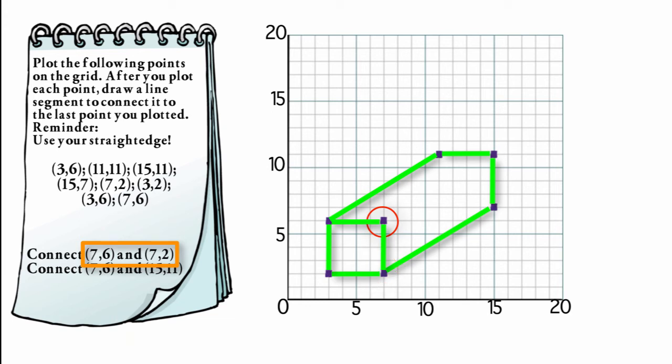And now it asks me to draw a line segment connecting (7,6) and (15,11). Well, I already know where (7,6) is located. (15,11), I'll go over 15 and up 11. And I see where that is located. And I will connect those two dots.